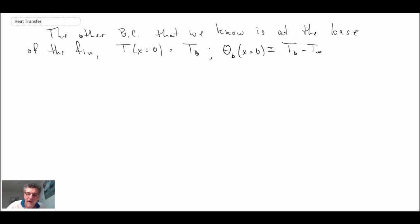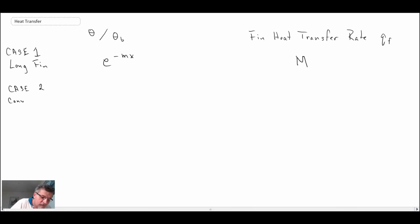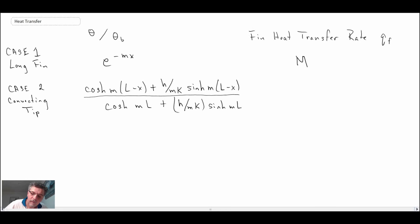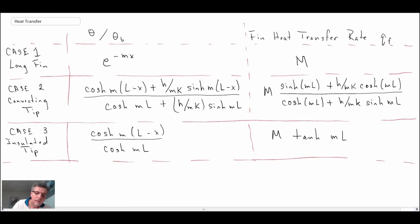When I do that, I'm going to give you two values. One is going to be the temperature distribution, and the other is going to be the fin heat transfer rate, which will be evaluated at the base. It basically tells us Q leaving the base, and that gives us the amount of heat being removed from the surface.